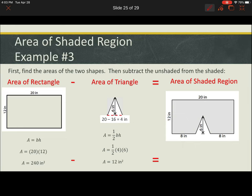So to find the area of the shaded region, just as before, we're going to subtract area of rectangle minus area of triangle, and we get 226 inches squared.